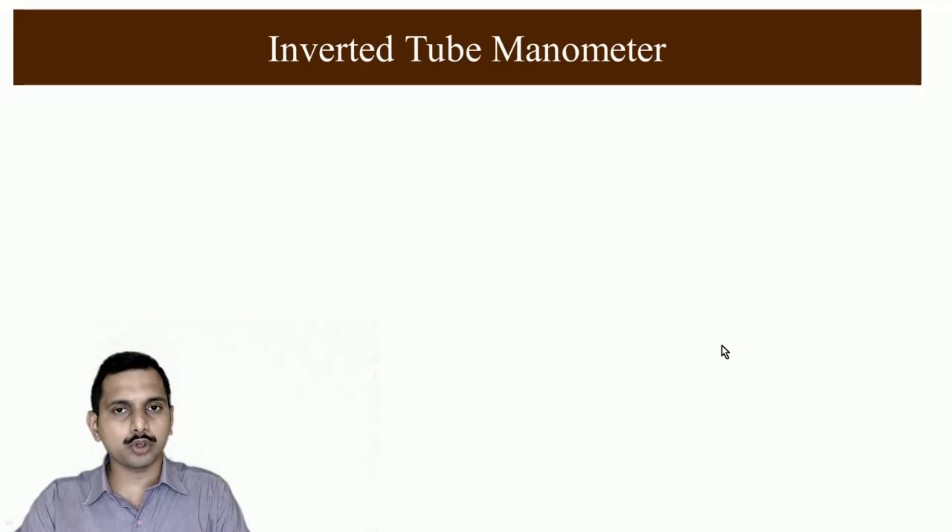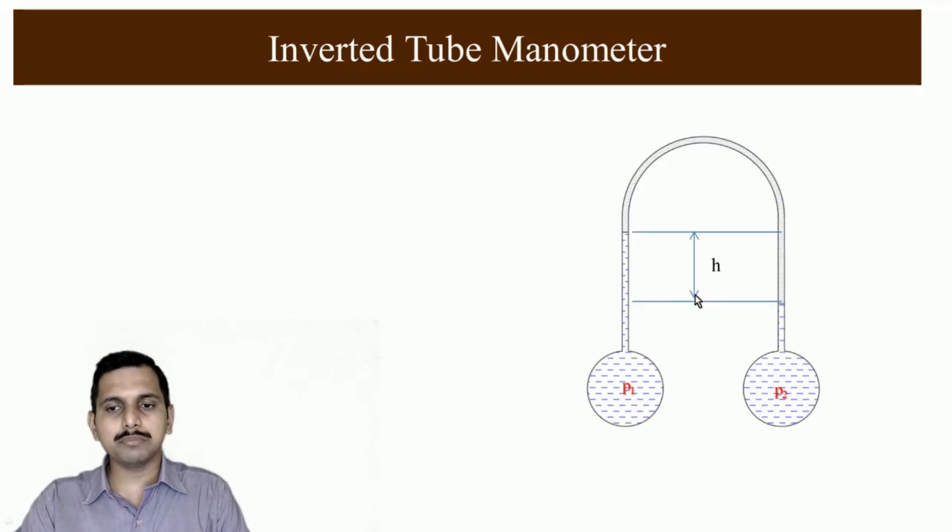We will see what is inverted tube manometer. Inverted tube manometer, one of the main reasons why we use this is because first is if the pressure difference is very low. Second thing is if the manometric liquid what we are using or manometric fluid has much lesser density than the fluid which is flowing in the pipes or the place where we have to take the pressure difference.